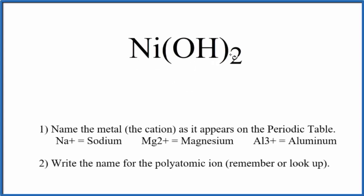To write the name for Ni(OH)₂, the first thing we need to recognize is this OH right here. When it's bonded to a metal, this is called the hydroxide ion.